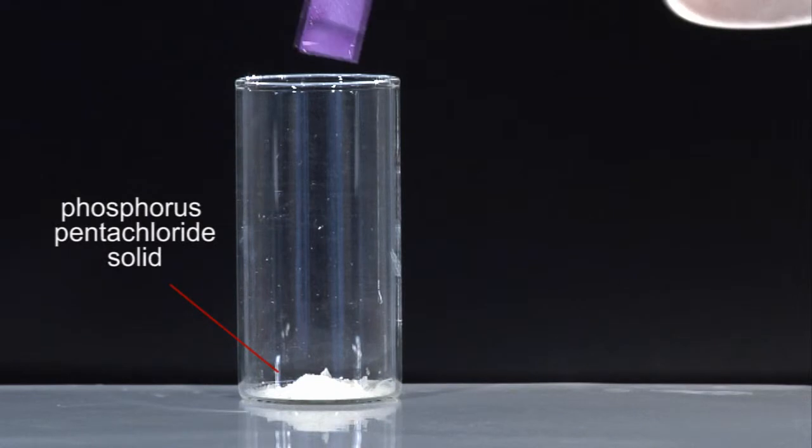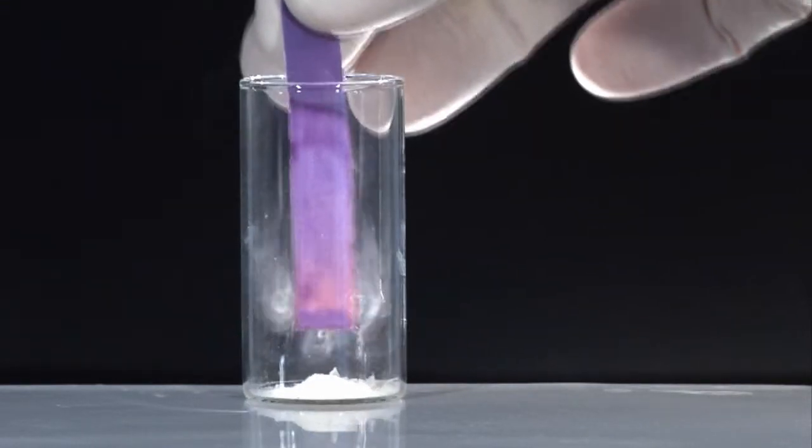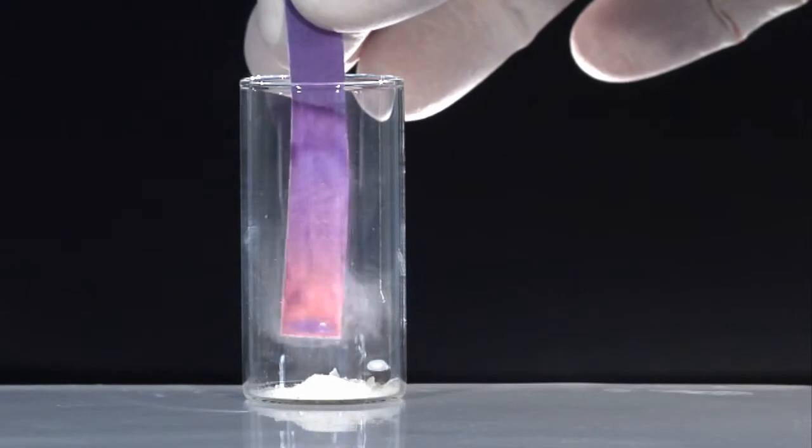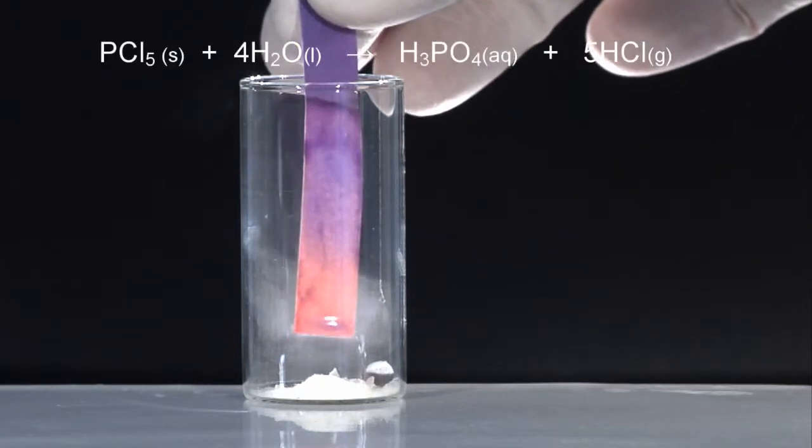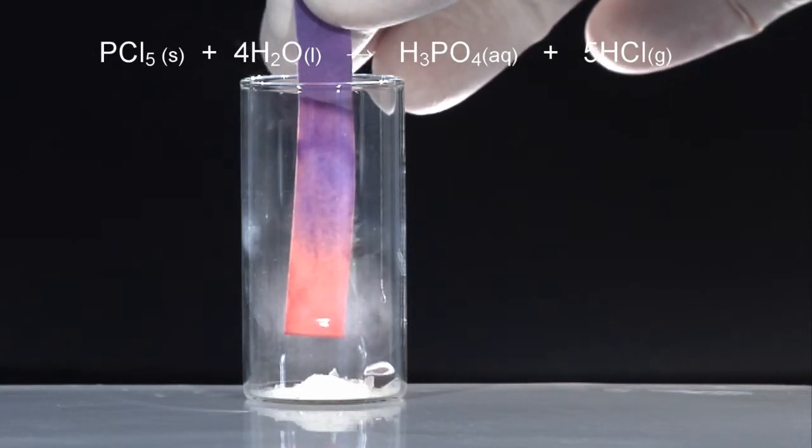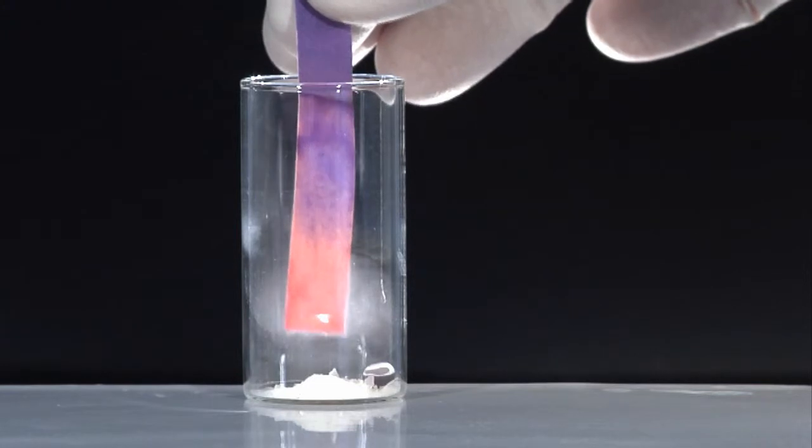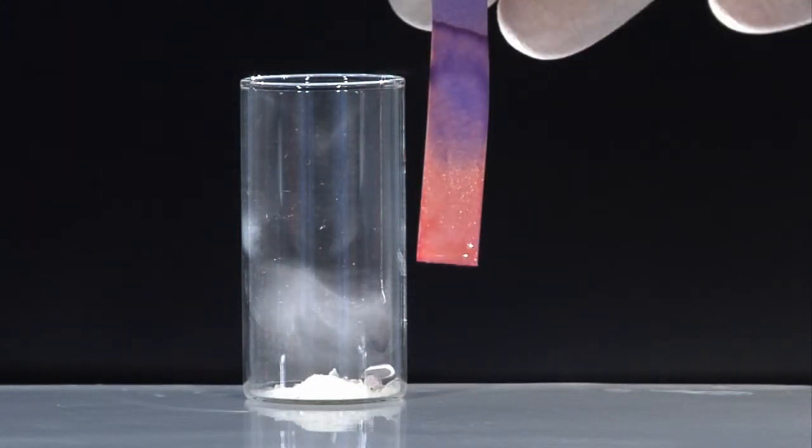When damp blue litmus paper is placed in this sample tube containing some phosphorus pentachloride, it quickly turns red. Solid phosphorus pentachloride reacts with moisture forming phosphoric acid and hydrogen chloride fumes. The hydrogen chloride dissolves in the water on the litmus paper forming hydrochloric acid.